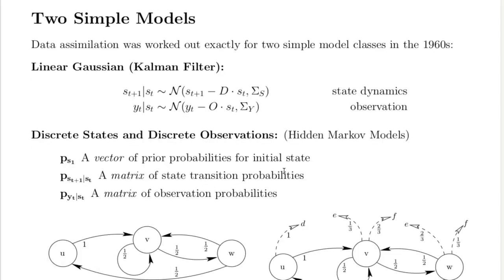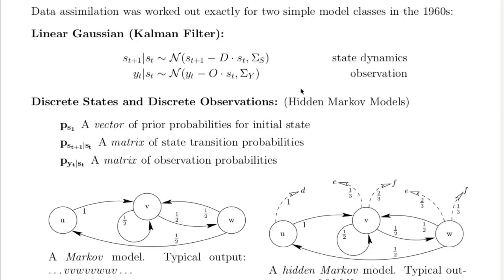In the 60s, this was all worked out for two special cases. If everything is Gaussian and linear, you have to integrate Gaussians, and it's called Kalman filtering. If everything is discrete, the integrals are simple sums, and it's called a hidden Markov model.